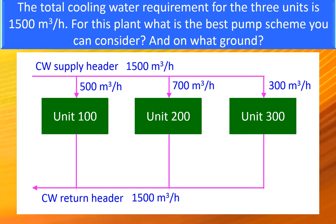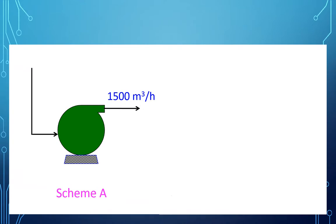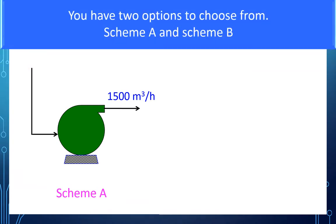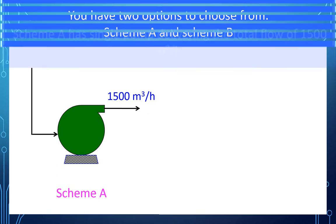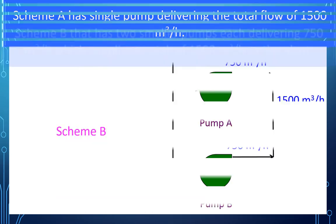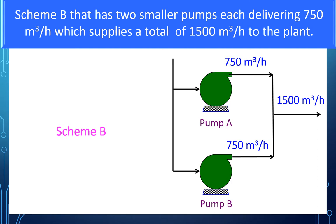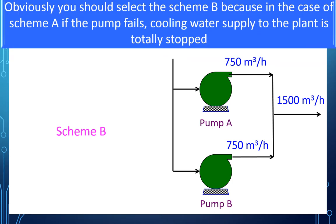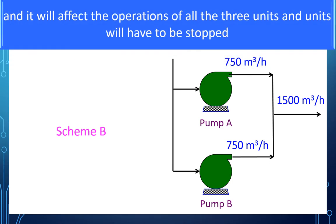For this plant, what is the best pump scheme you can select and on what ground? You have two options to choose from, scheme A and scheme B. Scheme A has a single pump delivering the total flow of 1,500 cubic meter per hour. Scheme B has two smaller pumps, each delivering 750 meter cube per hour which supplies the total of 1,500 cubic meter per hour to the plant. Obviously, you should select the scheme B because in the case of scheme A, if the running pump fails, cooling water supply to the plant is totally stopped and it will affect the operation of all the three units.